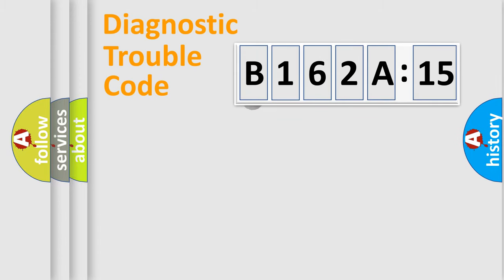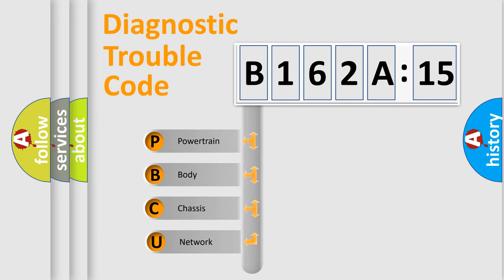Powertrain, Body, Chassis, Network. This distribution is defined in the first character code.